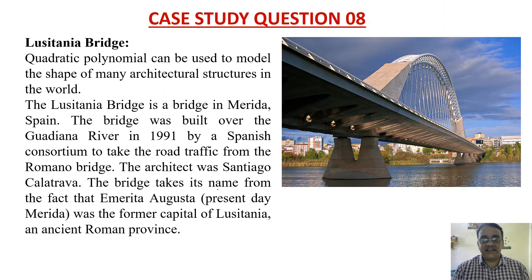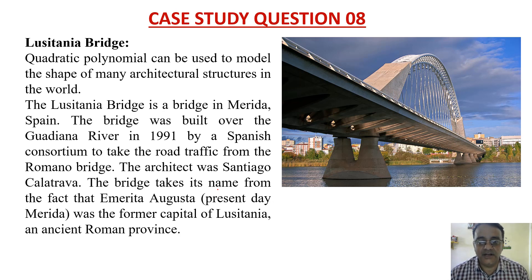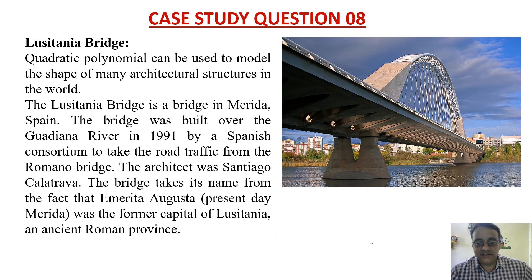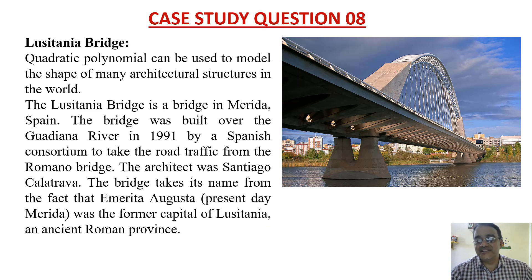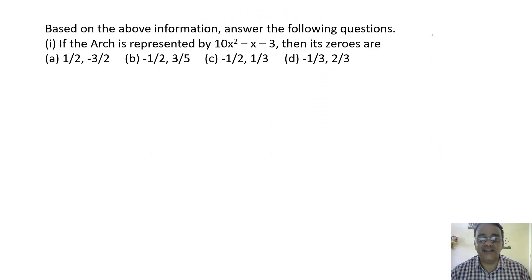Now case study question eight: Lusitania Bridge. A quartic polynomial can be used to model the shape of architectural structures. The Lusitania Bridge is in Merida, Spain, built over the Guardiana River in 1991. The architect was Santiago Calatrava. The bridge is named after Emerita Augusta, the former capital of Lusitania, an ancient Roman province.